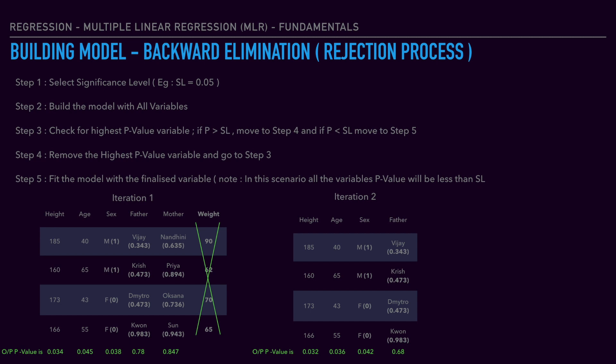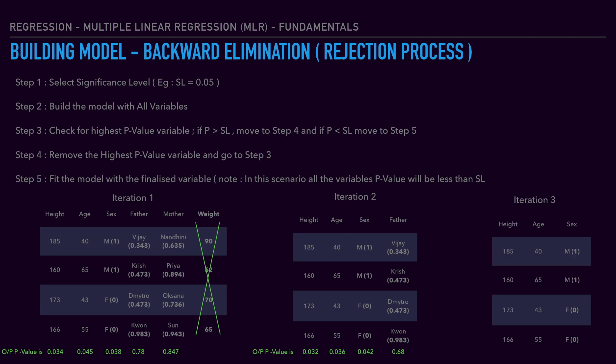The 3 remaining variables are height, age, and sex. In iteration 3, with 3 variables as input, the p-value of all variables is less than 0.05 — that is, less than the significance level. So now we go to step 5: fit the model with these 3 variables. In every iteration, we are rejecting a variable based on the p-value. Hence it is also called the rejection process.